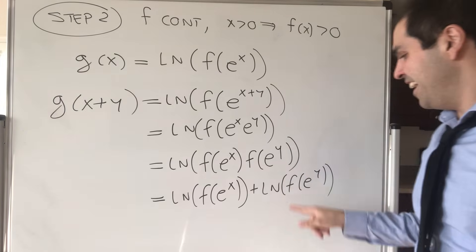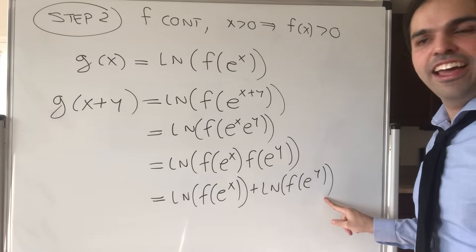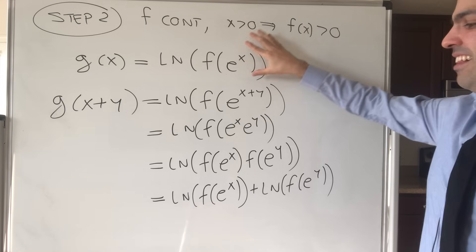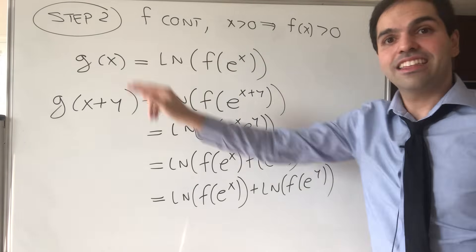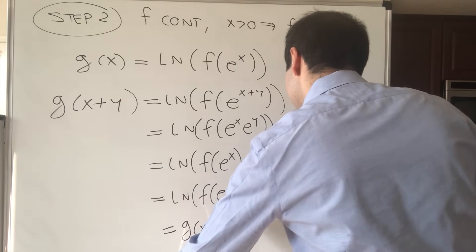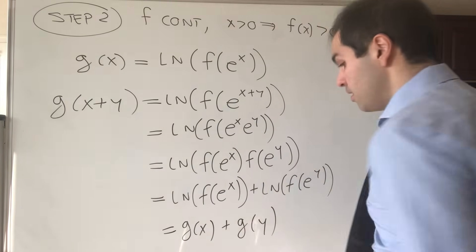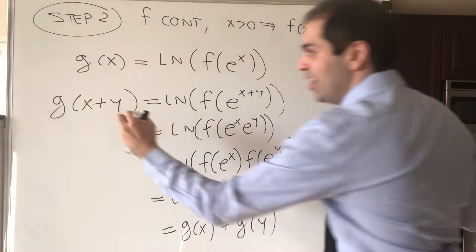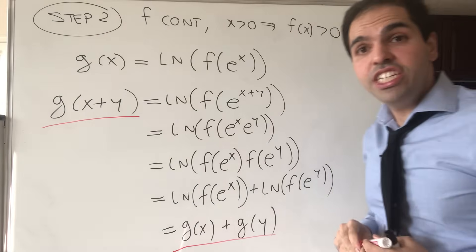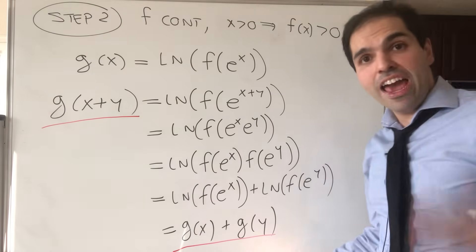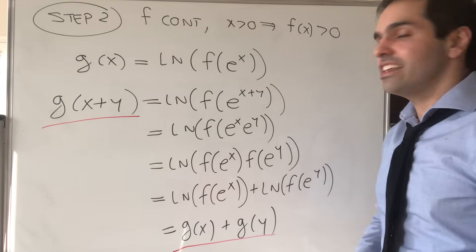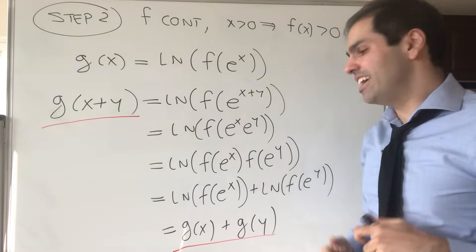So what does g satisfy? We get that g(x+y) equals g(x) plus g(y). This is the very famous identity called Cauchy's functional equation, of which I've already made a video. The result is that the only continuous function satisfying this is the linear functions.